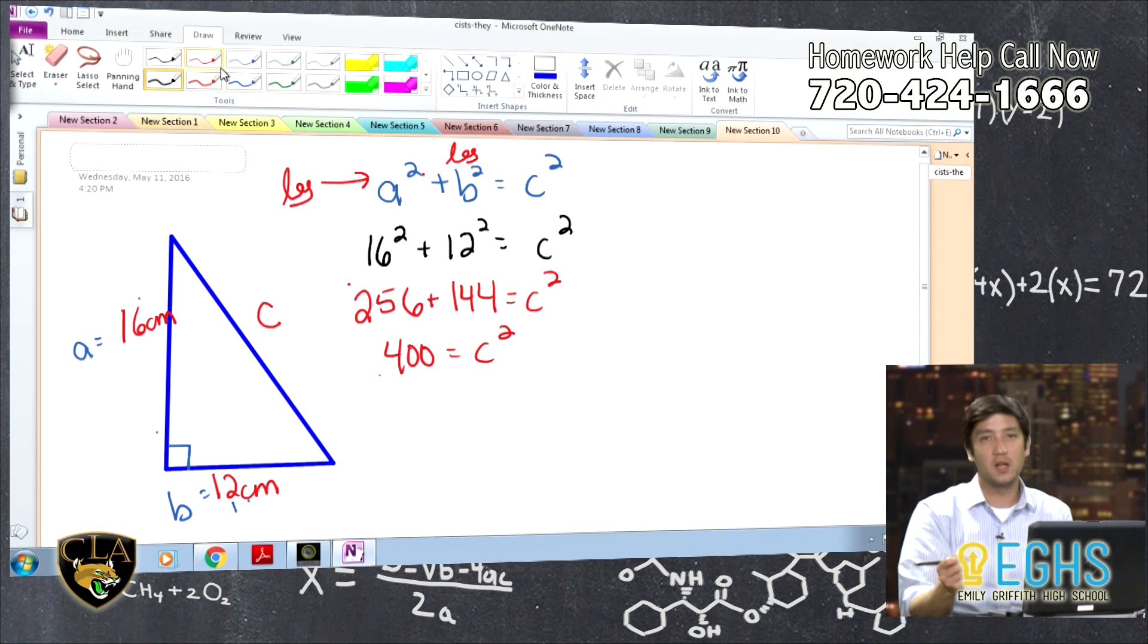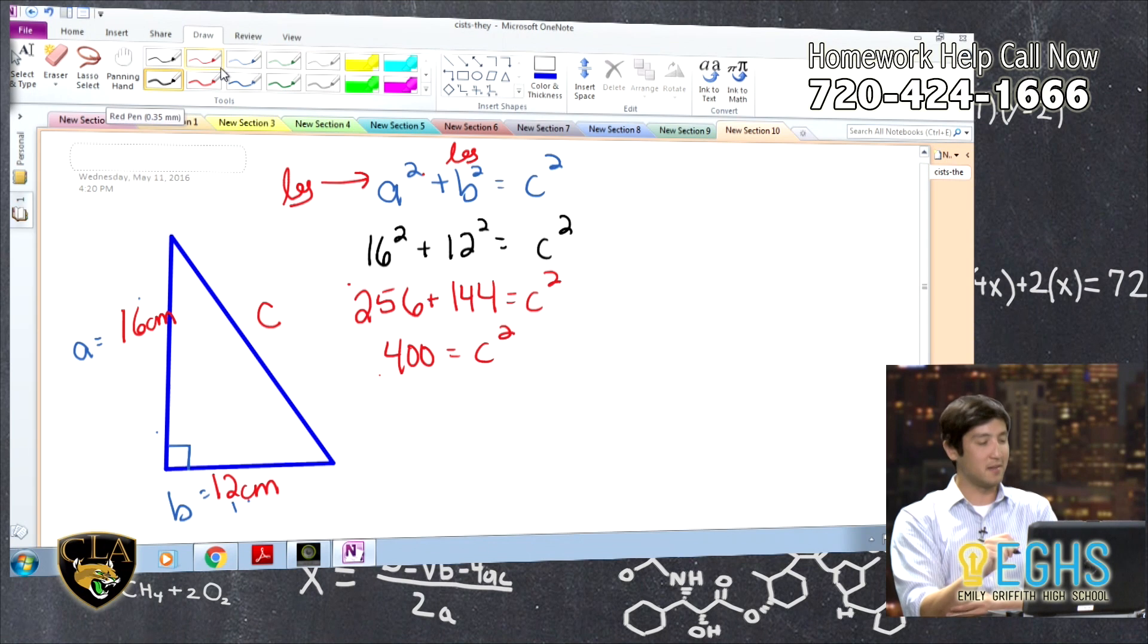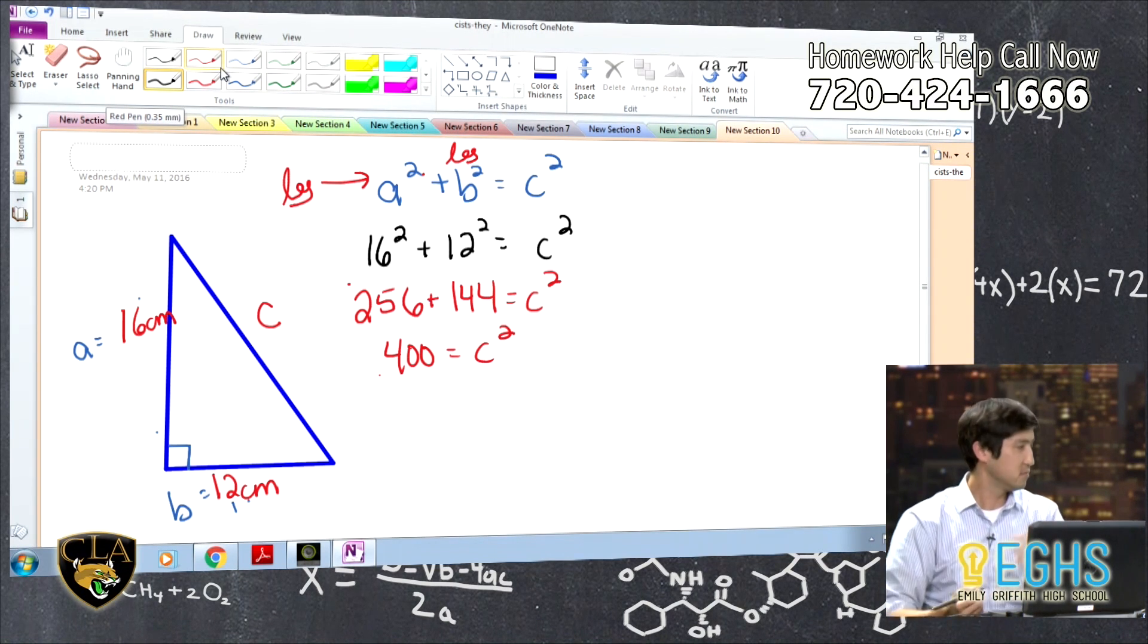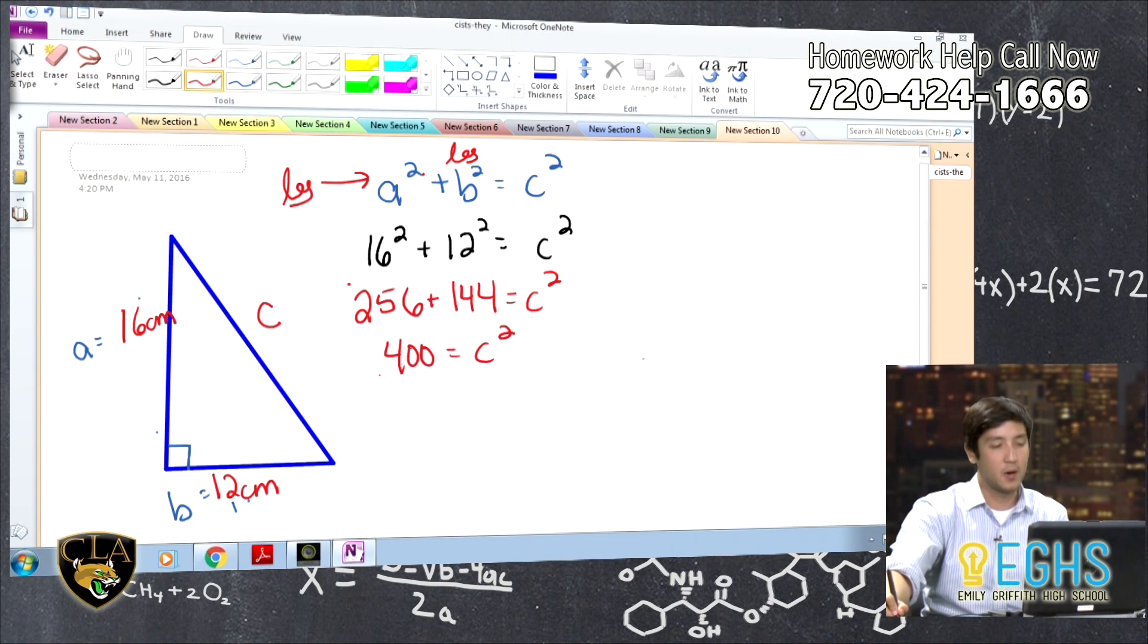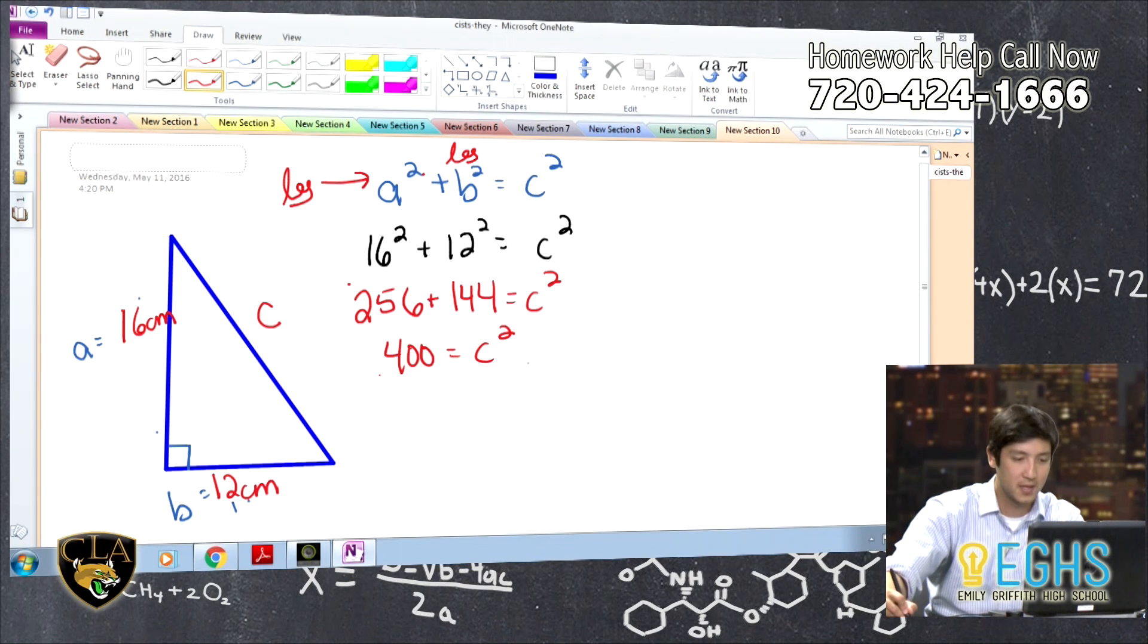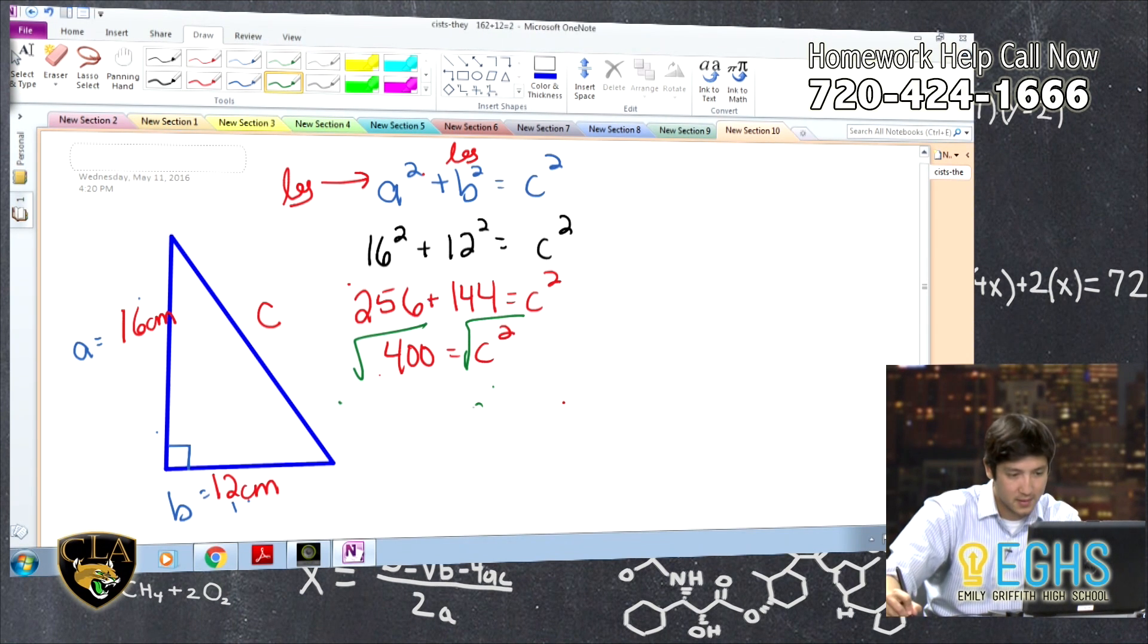And then this is where a lot of times students get hung up because this is kind of the first time they're really solving a lot of squared equations. So you're thinking, okay, how do I solve for C when it's C squared? All we're doing is like we always do, we're doing the inverse. So what's going to undo this operation of C squared? And we are just going to do the square root. That's going to undo that. So we end up with C equals 20.